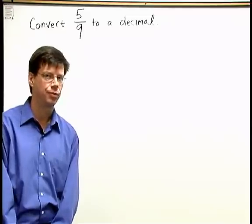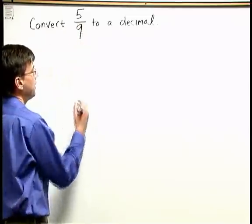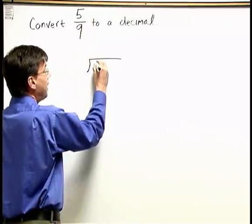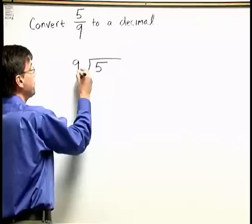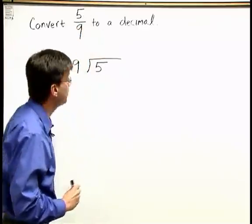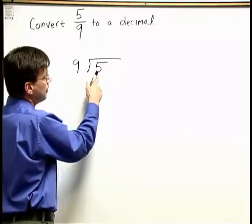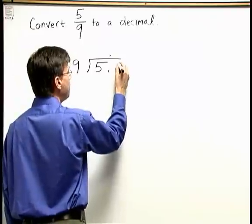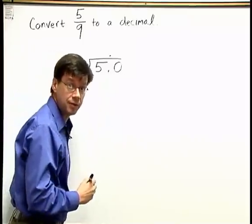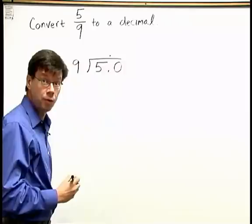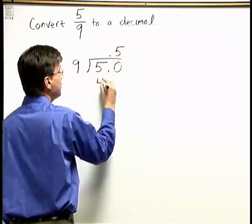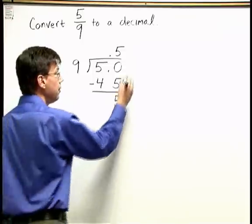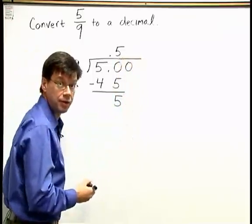Now let's convert 5 ninths to decimal form. 5 ninths can be written as a division problem: 5 divided by 9. The number on top, 5, goes inside the long division box; 9 goes outside. 9 doesn't go into 5 as a whole number, so we add a decimal point, write the decimal point above for our answer, and add a 0. Thinking of this as 50, 9 goes into 50 five times — 5 times 9 is 45. Subtracting: 50 minus 45 is 5.